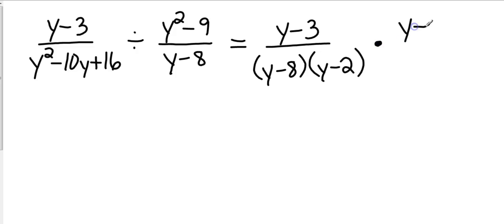Now I switch my division to multiplication and I flip my second fraction. So now I have a y minus 8 on top and y squared minus 9. We need to recognize that as a difference of two perfect squares, so that's going to be two parentheses: y plus 3, y minus 3. I like my positives first.